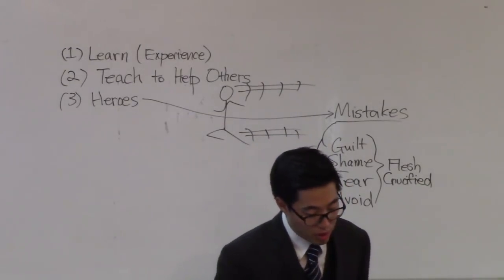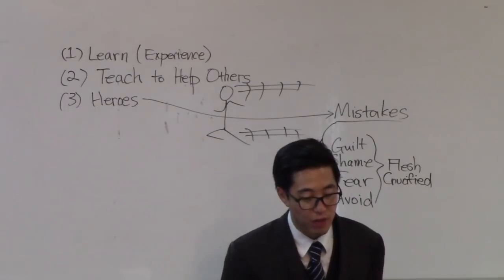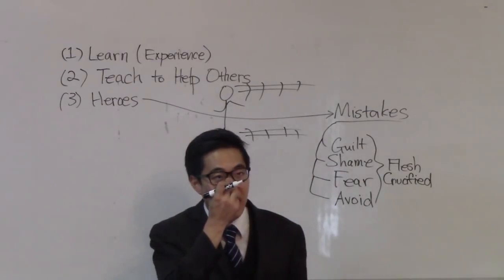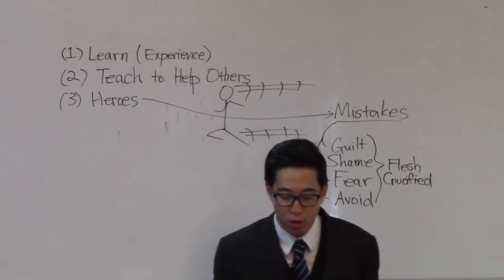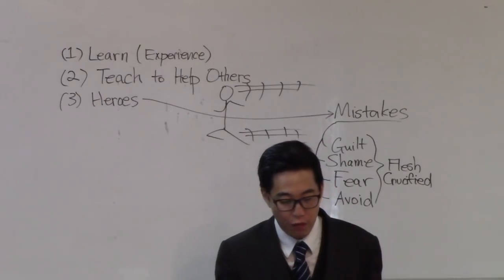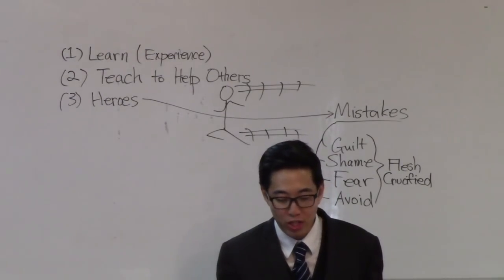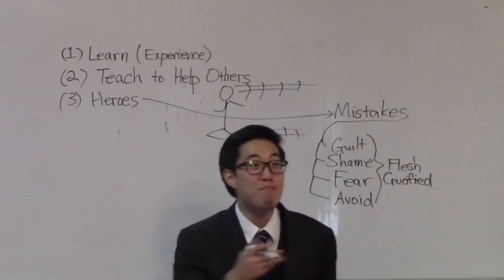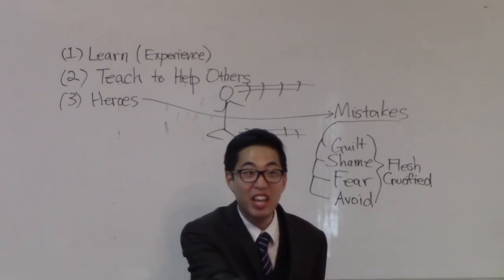Look at verse 22. The Bible says, by faith, Joseph. Joseph, he lied to his brothers about his identity. Look at verse 23. By faith, Moses, he's a murderer. A murderer should not belong in the heroes of faith.